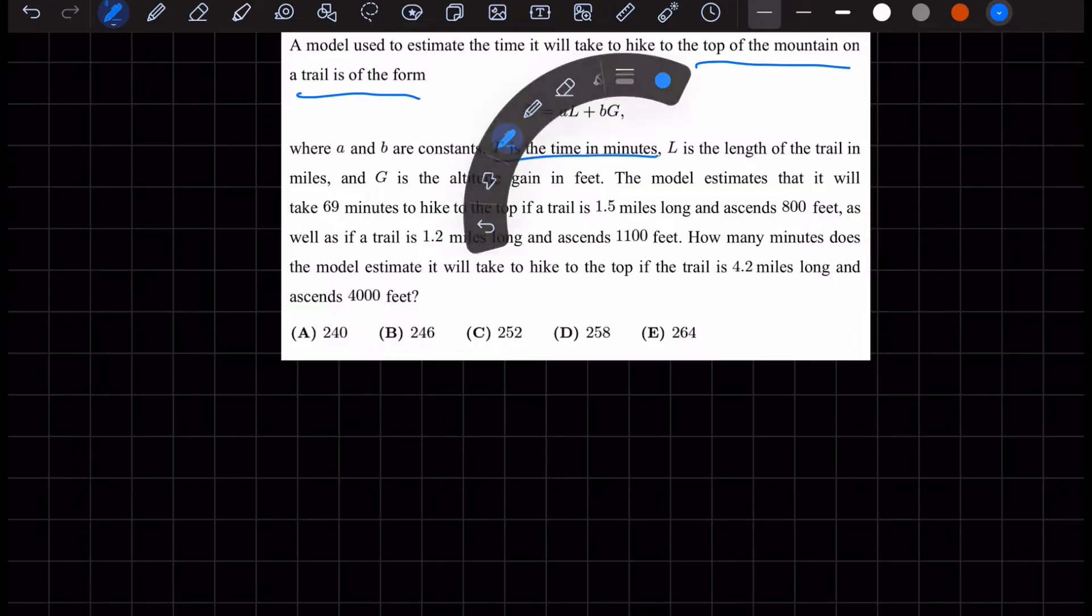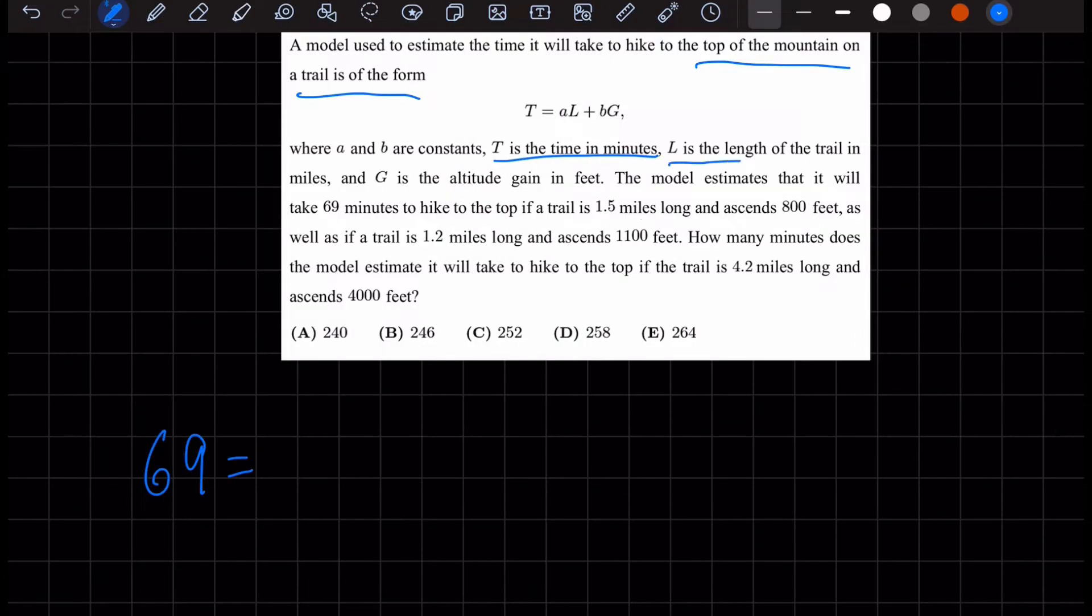So since T is the time in minutes, let's put 69 equals, if the trail is 1.5 miles long, and L is the length of the trail, let's put A times 1.5, and it ascends 800 feet. And G is the altitude gained in feet. So this is plus B times 800.